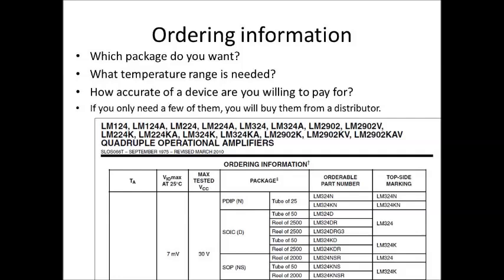On this data sheet they're talking about a tube of 25 or a reel of 2,500 — that has to do with if you're in manufacturing and building a bunch of something and you need a whole bunch of these. We're only going to need just a couple, so we would not buy these from Texas Instruments directly; we'd go to a distributor or somewhere like Fry's or Radio Shack. We don't need to worry about this quantity sort of thing.